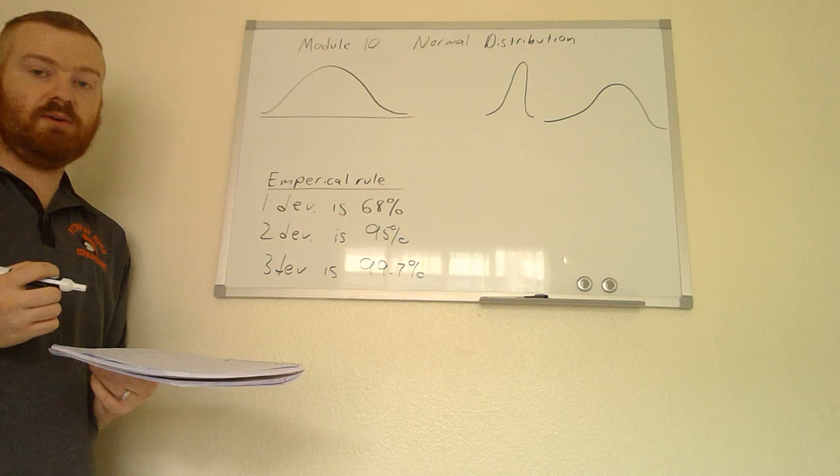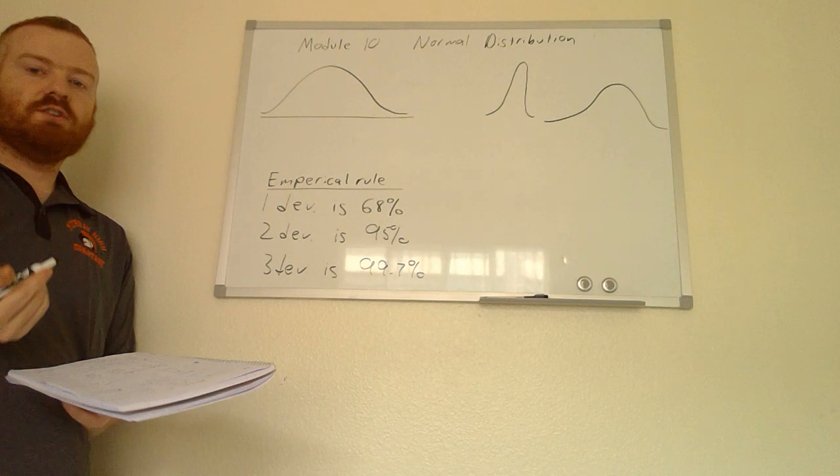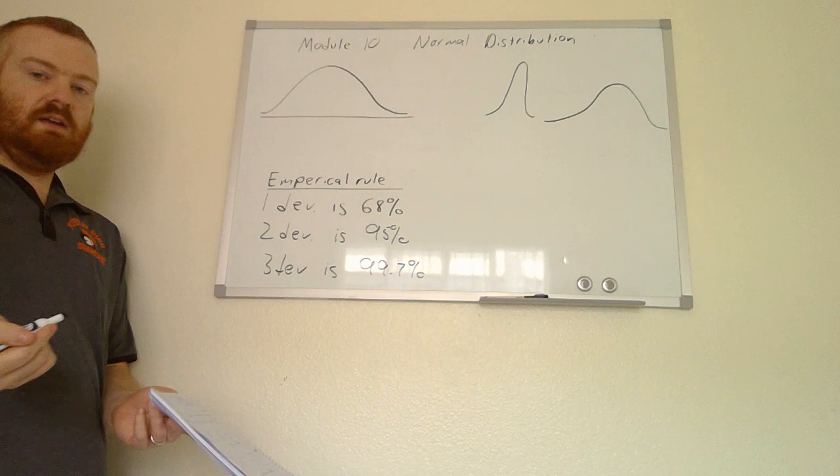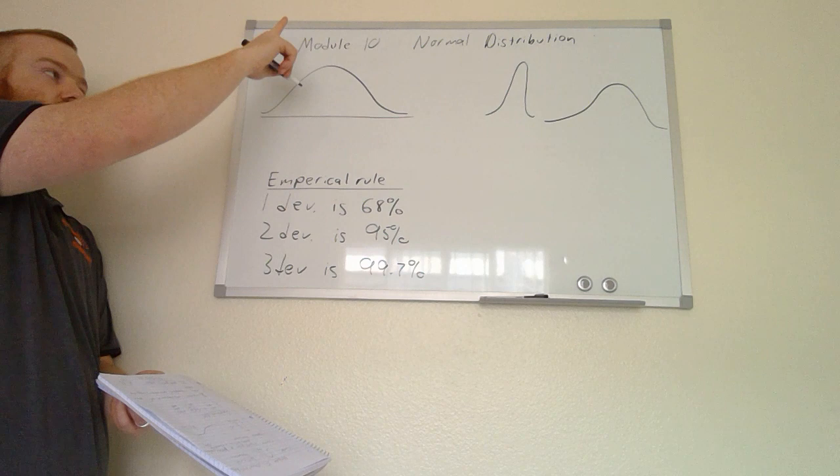This next module is actually going to be the last one for this class — module 10, which covers something called normal distribution. Normal distribution is basically a way in which data is compiled and grouped together. If a group of data follows a normal distribution and we were to plot it on a graph, it would look something like a bell-shaped curve.